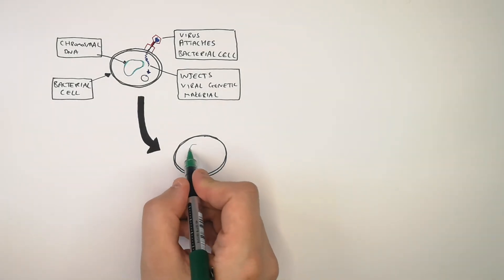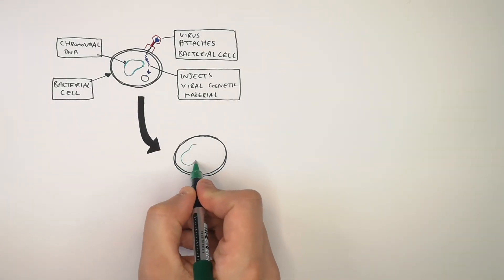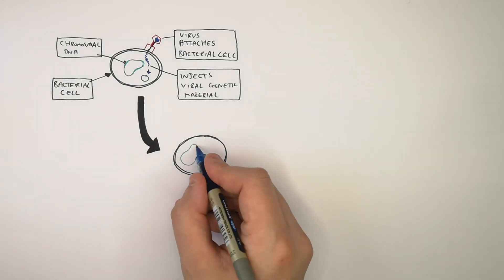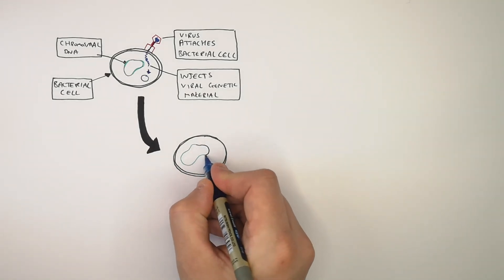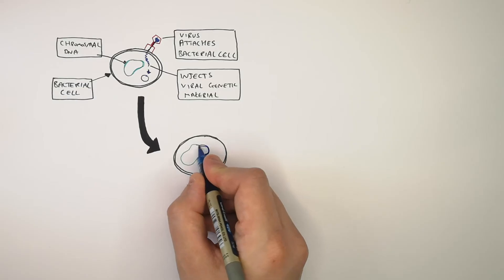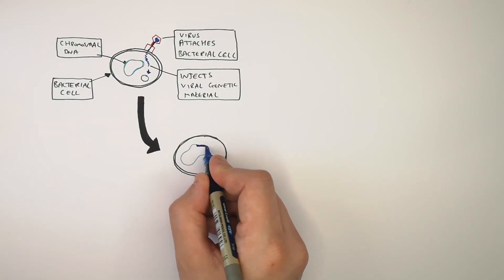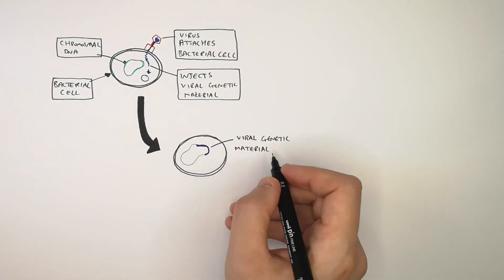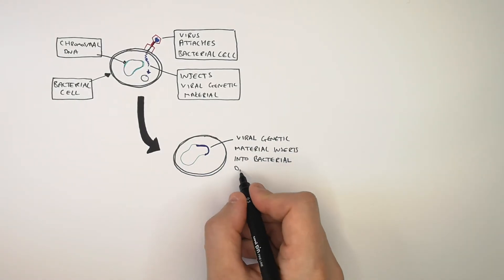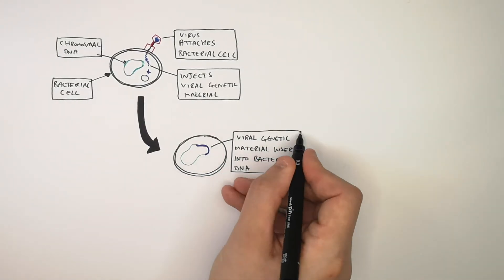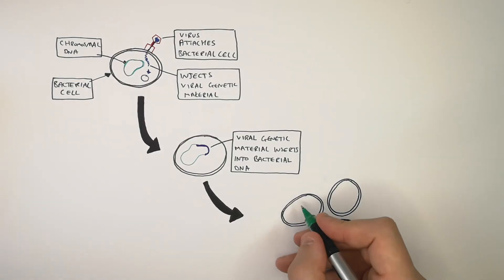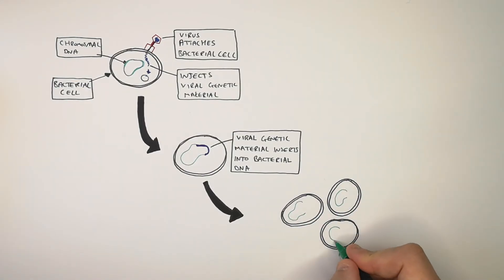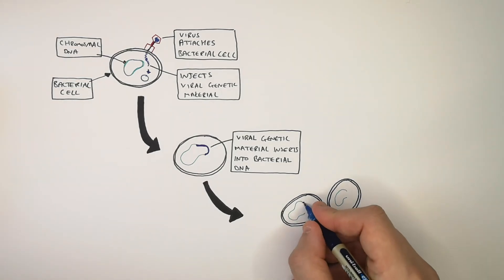In the lysogenic pathway, the chromosomal DNA of the bacteria can combine with the viral DNA from the virus. As you can see here, the viral DNA has combined with the chromosomal DNA of the bacteria — the viral genetic material inserts into the bacterial DNA. This bacterial cell will then undergo binary fission to reproduce many bacteria.